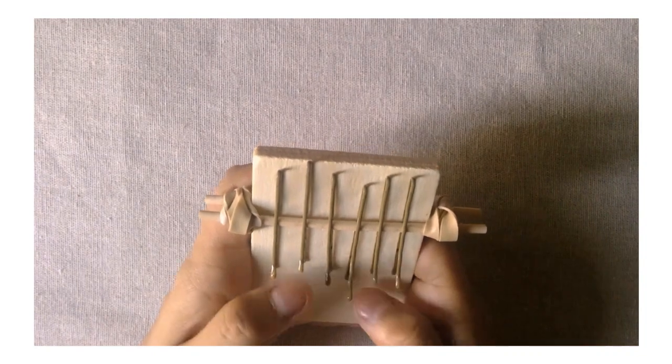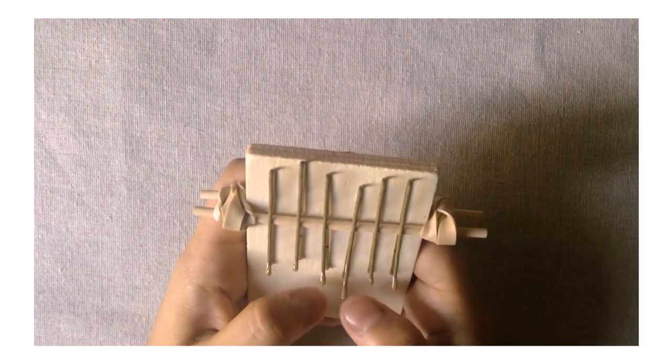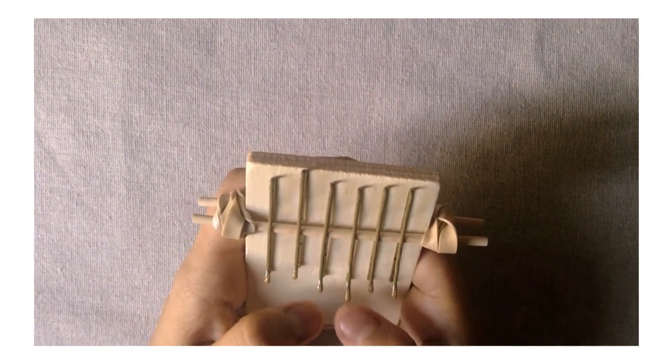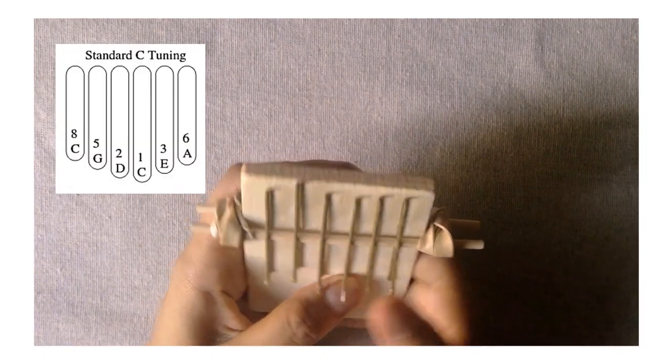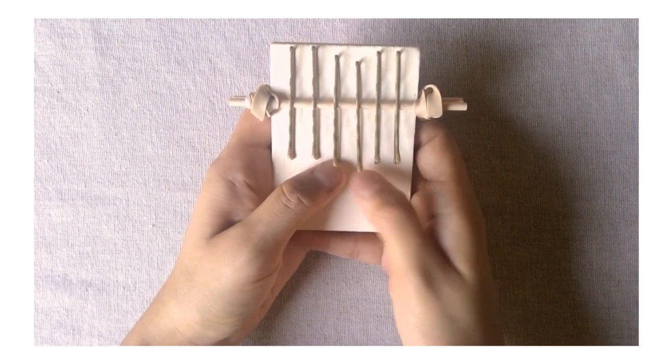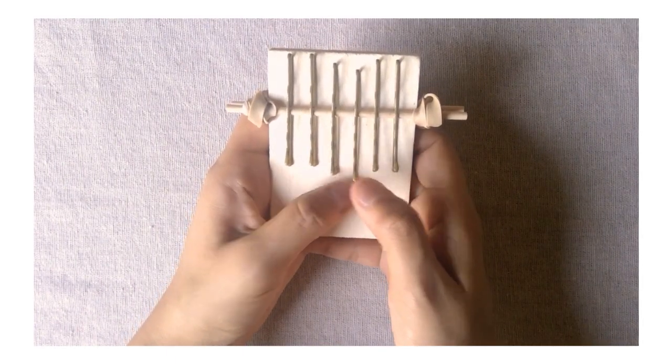You can tune the keys by moving the bobby pins up and down the dowel. To make the note lower, move it down. To make the note higher, move it up. Tuning it to the standard C tuning may not be easy, but even without tuning, you can play and discover what sounds you can make.